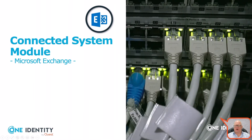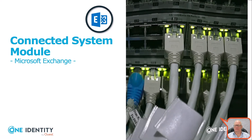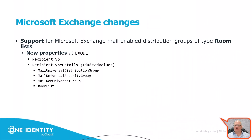For on-premises Microsoft Exchange, there is a new room list group type. We now support that specific room list type for local Exchange. New properties were added to the Exchange DL, including a recipient type and recipient type details as a limited value list: universal distribution group (standard), universal security group, standard mail non-universal group, and a new type called room list.